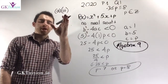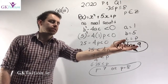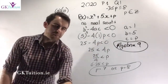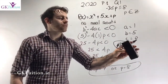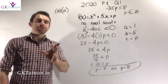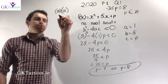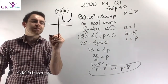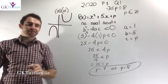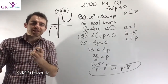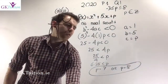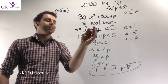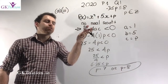The theory behind part 3 of this question can be found in algebra tutorial 9 on the website. In part 3, we're asked to find the two values of p for which the function does not cross the x-axis. If a quadratic doesn't cross the x-axis, it has either a minimum point above or a maximum point below the x-axis, meaning it has no real roots. If a quadratic has no real roots, the first thing to recall is that b squared minus 4ac is less than 0 — the discriminant is negative.